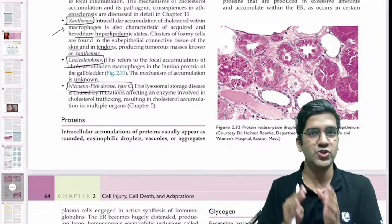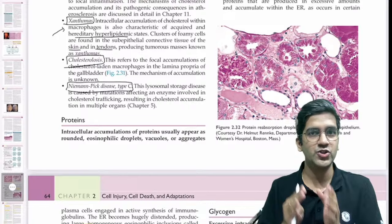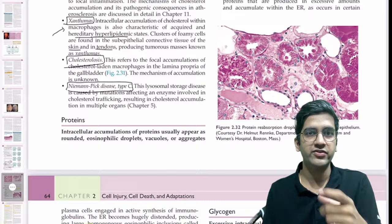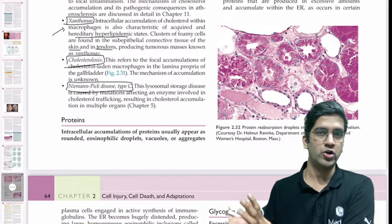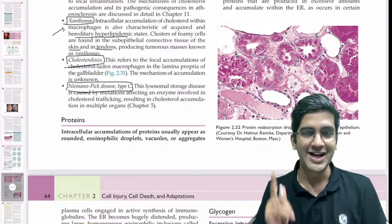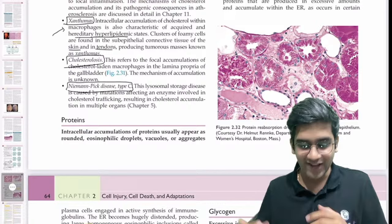So we're going to continue the same thing. If you remember yesterday's class, we started with lipid and cholesterol accumulation. I want to complete the intracellular accumulation — at least one part of the first chapter. We'll do a little bit of every chapter so that it gives you confidence to learn general pathology. That's the ultimate motive. The trend has to change from your batch onwards — every junior is going to read standard textbooks and become amazing doctors.